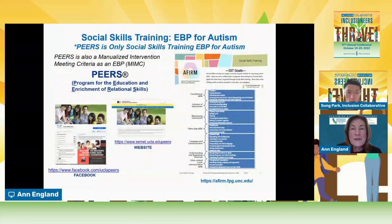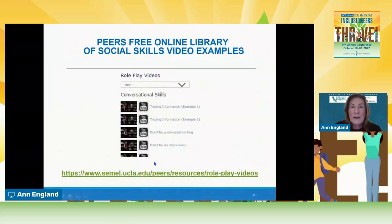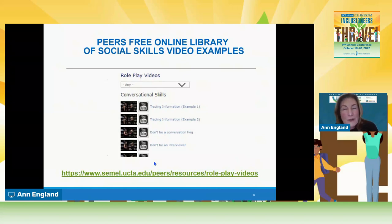When we look at social skills training, PEERS is the only social skills training that is an evidence-based practice for autism. It's also what we call a manualized intervention meeting criteria as an EBP. PEERS is really out of UCLA. There's an evidence-based practice description of it on the AFFIRM module, and if you want to learn more about PEERS you can go to their Facebook page or their website. They have a free online library of social skills video examples so you can show an example and a non-example, because video modeling is very helpful for individuals with autism and there's research to support that.